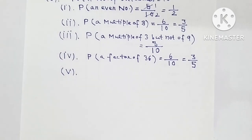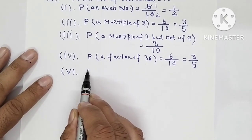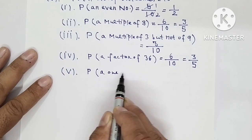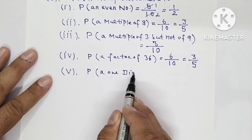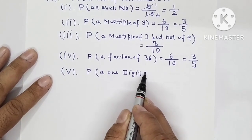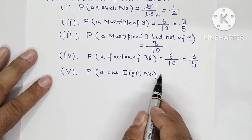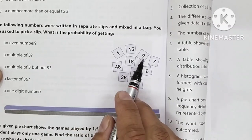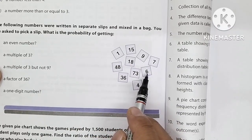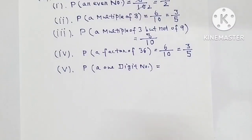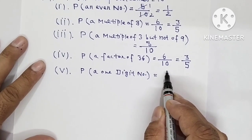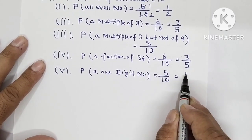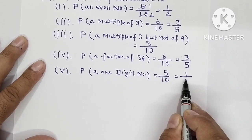Part number 5 — probability of a one-digit number. Looking at the slips, the one-digit numbers are 1, 2, 3, 4, and 5 — that is 5 numbers. So the probability is 5 over 10, which simplifies to 1 over 2.